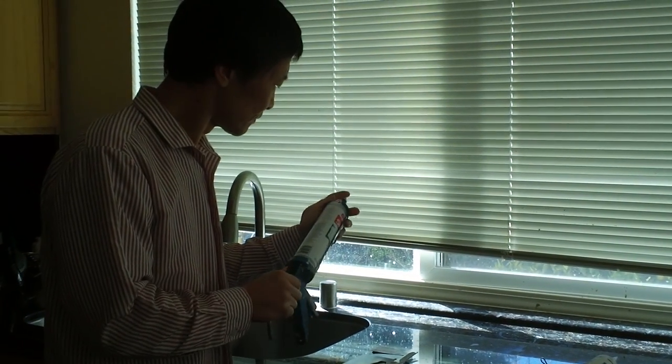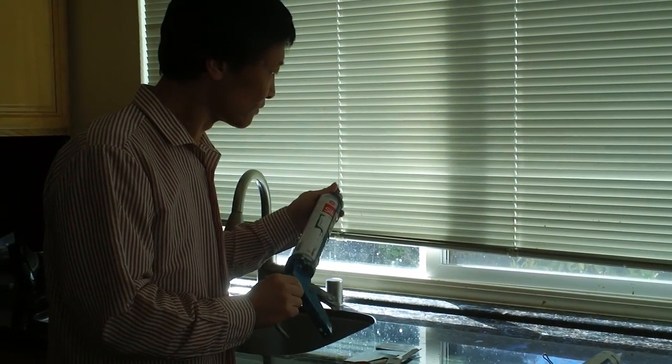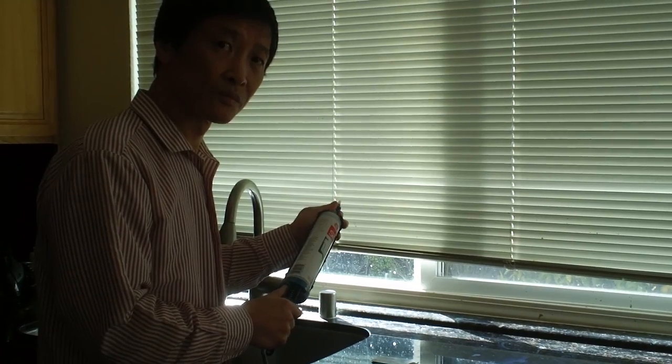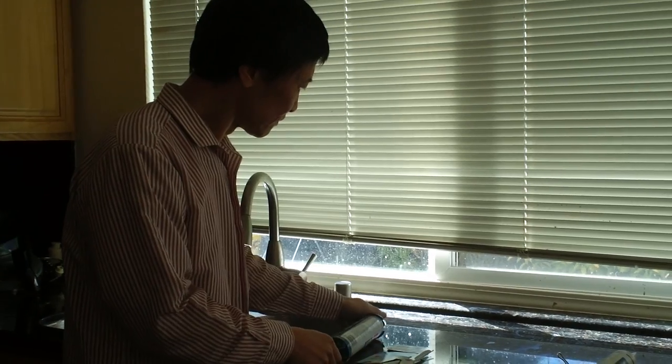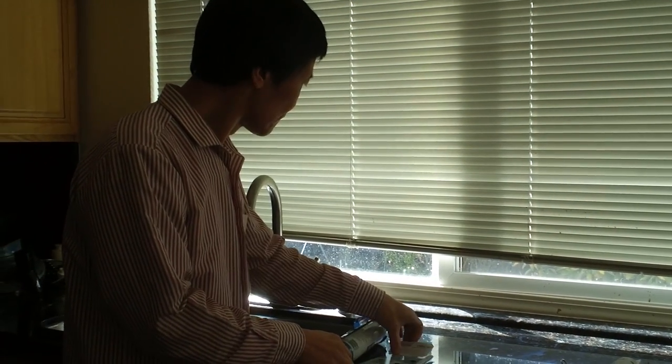We're going to be showing you some things today about caulking around the kitchen sink. You should probably choose a clear color caulking if you have a dark counter like the one you see here, because you don't really want white against your dark countertop.